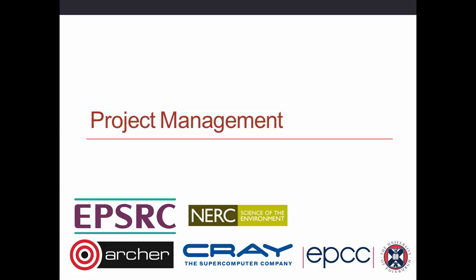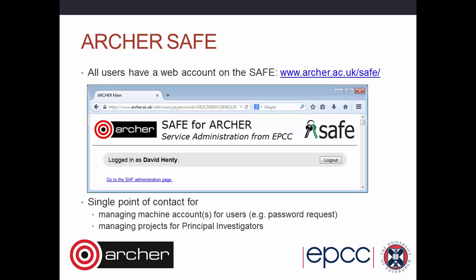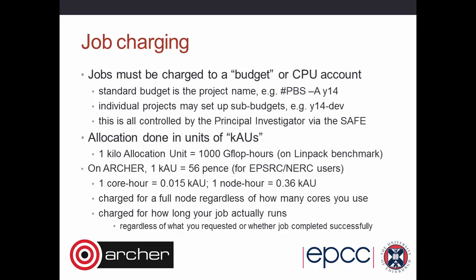All jobs have a budget allocated to them — all users and groups have budgets. Everything on Archer is controlled via a sophisticated web interface called the SAFE, written by colleagues at EPCC. Every user has an account on the SAFE to manage multiple login accounts and multiple projects — it's a single point of contact. Principal investigators can use it to approve new accounts and move time between projects and users. The standard budget is the project name — for example, on the training course you're in the Y14 budget. You can also create sub-budgets allocated down to individual users.